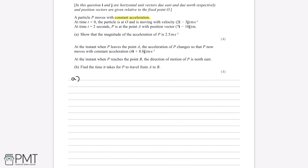We lay out what is also called a SUVAT equation by listing the terms we could potentially use, remembering that displacement, velocity, and acceleration are all vectors. The displacement S is the position vector, which is 7i minus 10j metres. The initial velocity is 2i minus 3j as we're told in the question. The final velocity we don't know and don't need, so we can put a slash there.